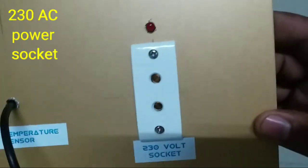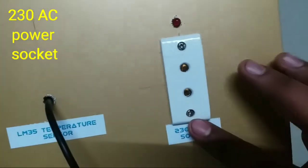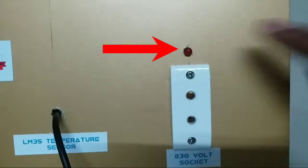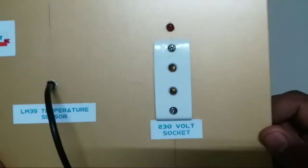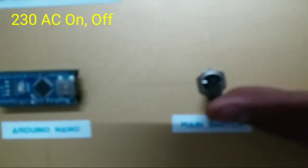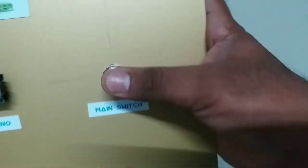This is 230 volt AC socket. Red LED is used to indicate heater on/off status. Main switch is used to switch complete setup. It controls 230 volt AC.